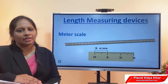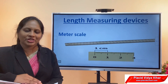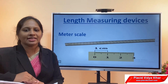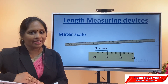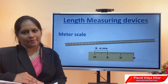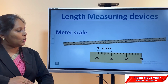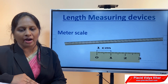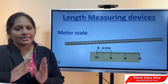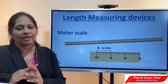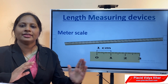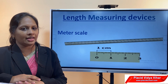Let me familiarize you with some length measuring devices which are known to you. What is this on the screen? It is called a meter scale. Why is it called a meter scale? Because 1 meter is equal to 100 centimeters. In this scale, when you examine it closely, you can see there are numbers marked starting from 0, then 1 centimeter, 2, 3, like that. There are 100 centimeters marked in that scale, and since 100 centimeters is 1 meter, we call it a meter scale.